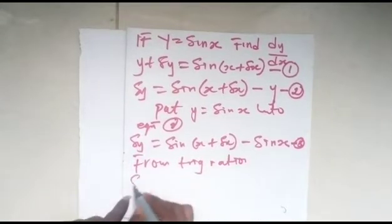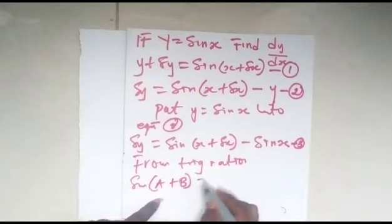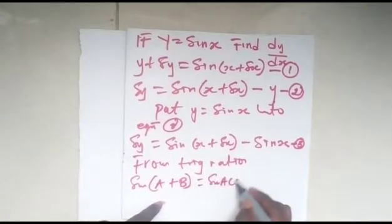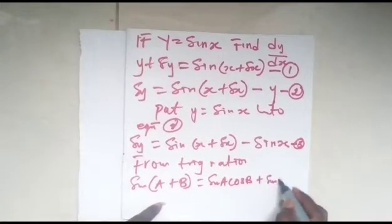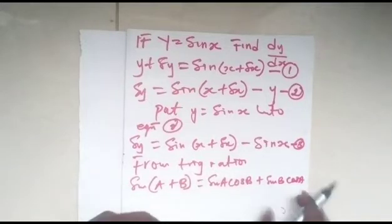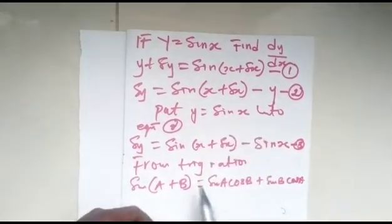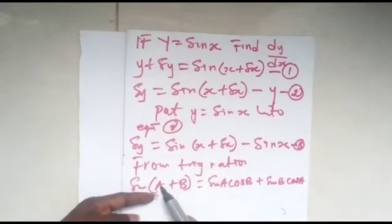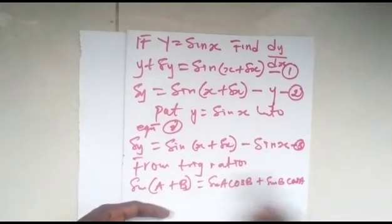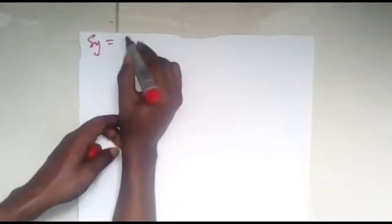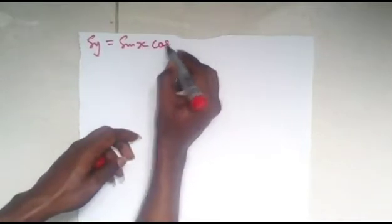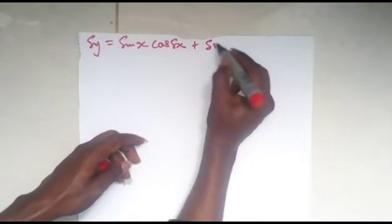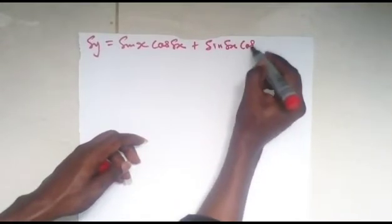From trig ratio, we have that sin(a + b) equals sin a cos b plus sin b cos a. Now we want to substitute this into equation 3. If you watch properly, you have sin(x + δx). So it's the same form, with x as a and δx as b. Substituting this in, let's see what we get.